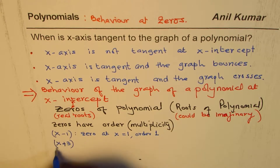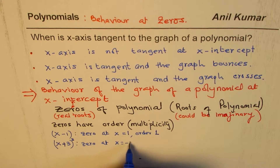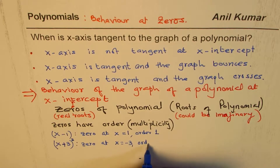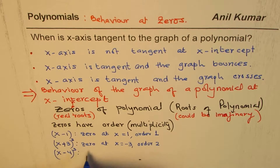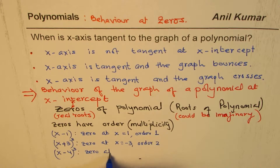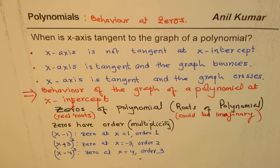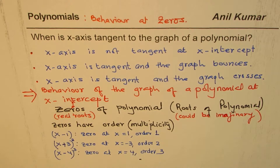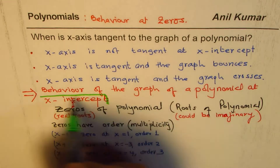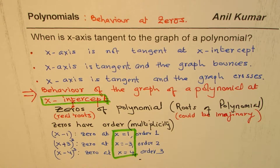Another example: (x + 3)² gives a zero at x = −3 and the order is 2. A third example: (x − 4)³ gives a zero at x = 4 and the order or multiplicity is 3. These are all x-intercepts at their respective x-values.